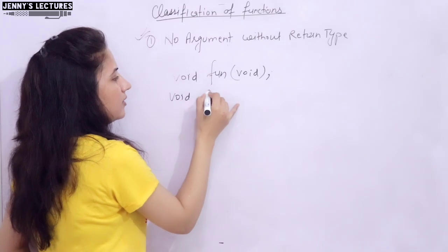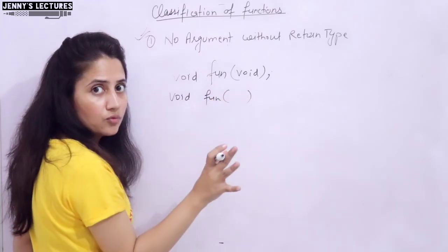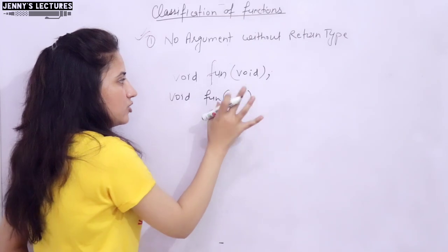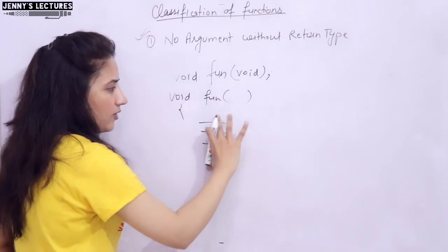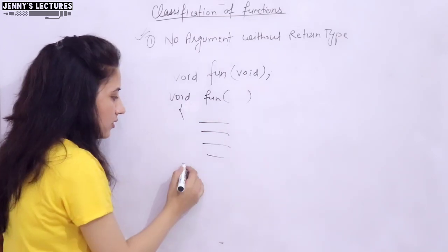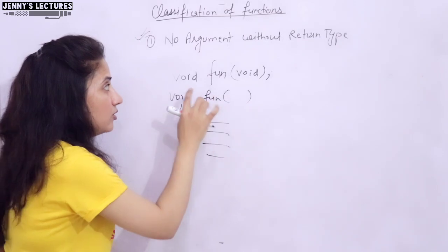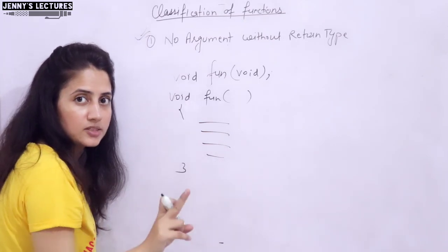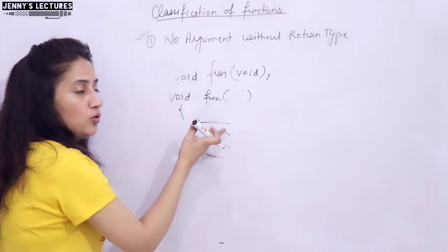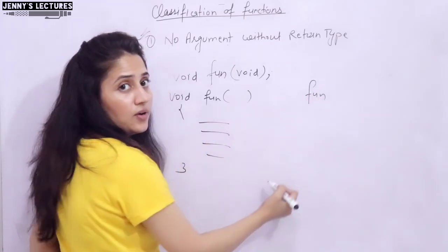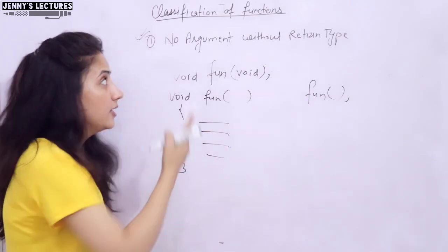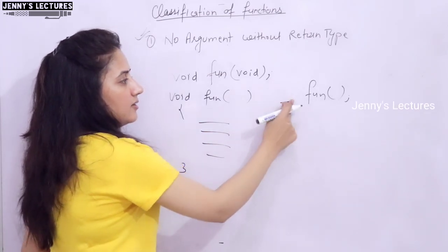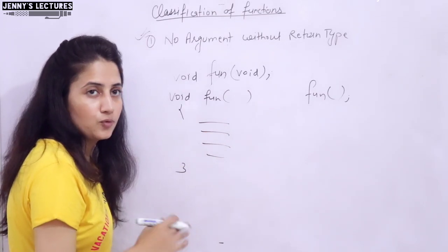When you define this function, it's the same: void, then the function name, and here no need to write void if you have already declared the function — you can leave the parameter list empty. Inside the function body, write whatever statements you want. Since this function is not returning anything, we will not write any return statement. To call this function, just write the function name with empty parentheses — no arguments are passed, and in the call we do not write any return type.